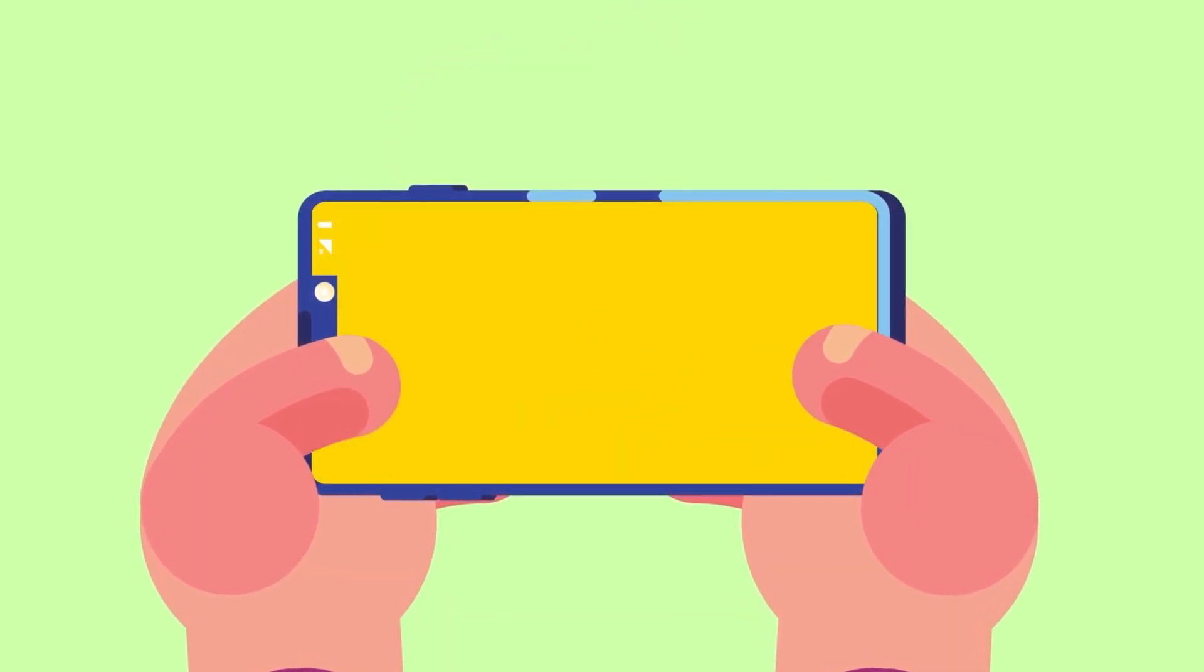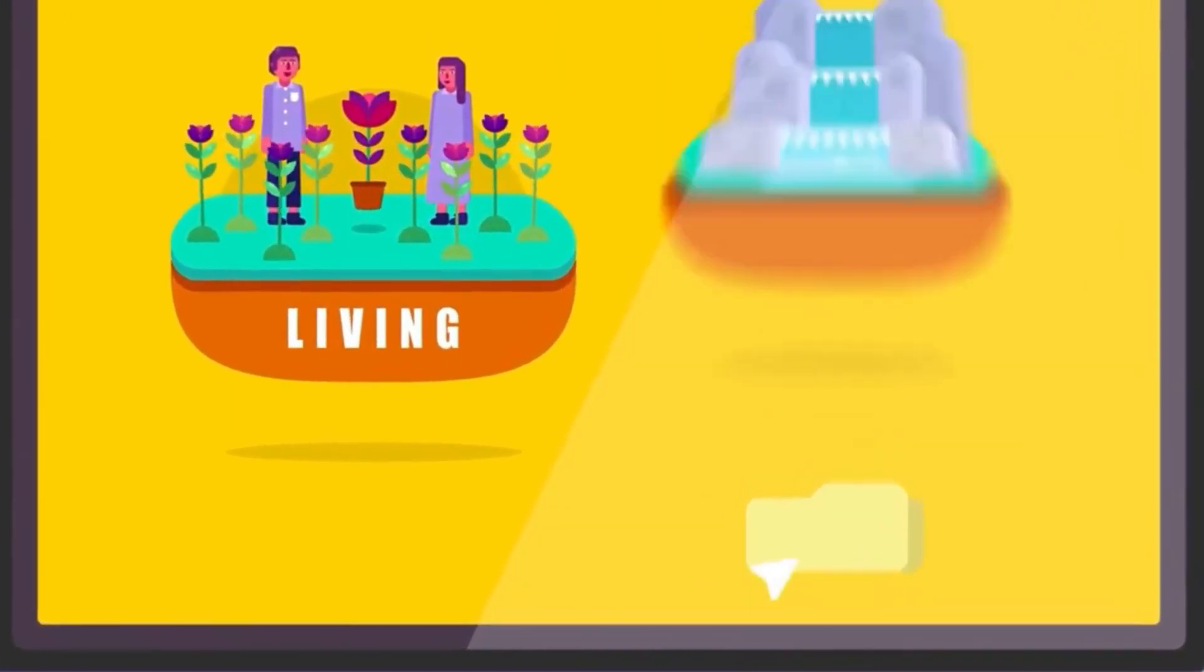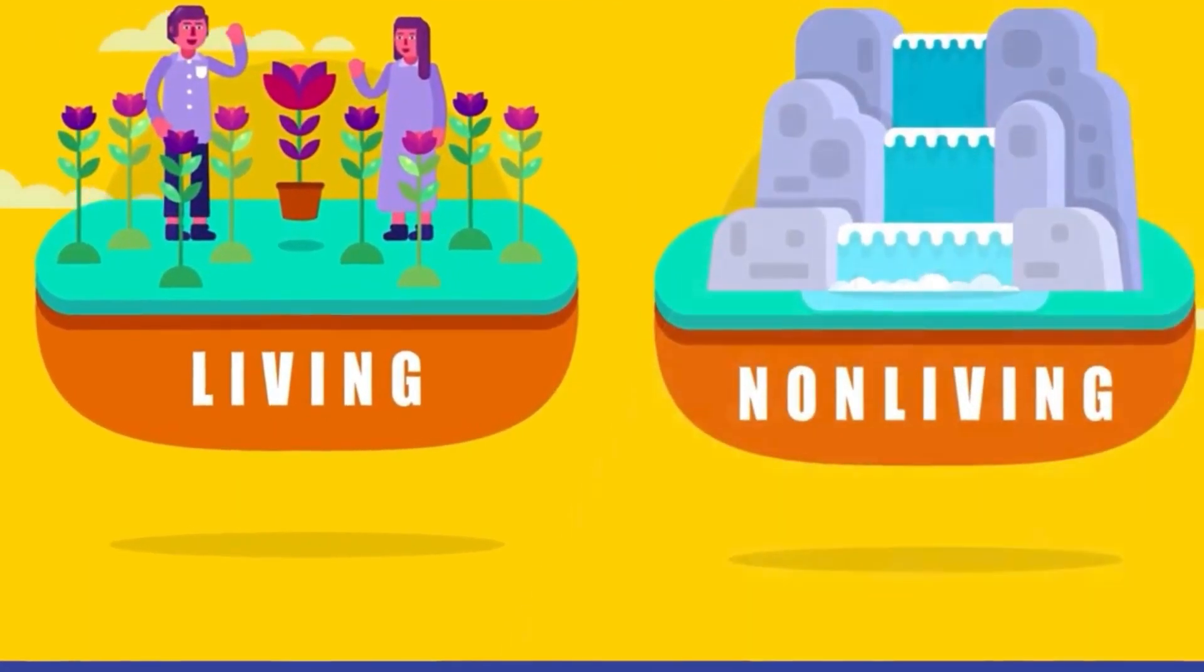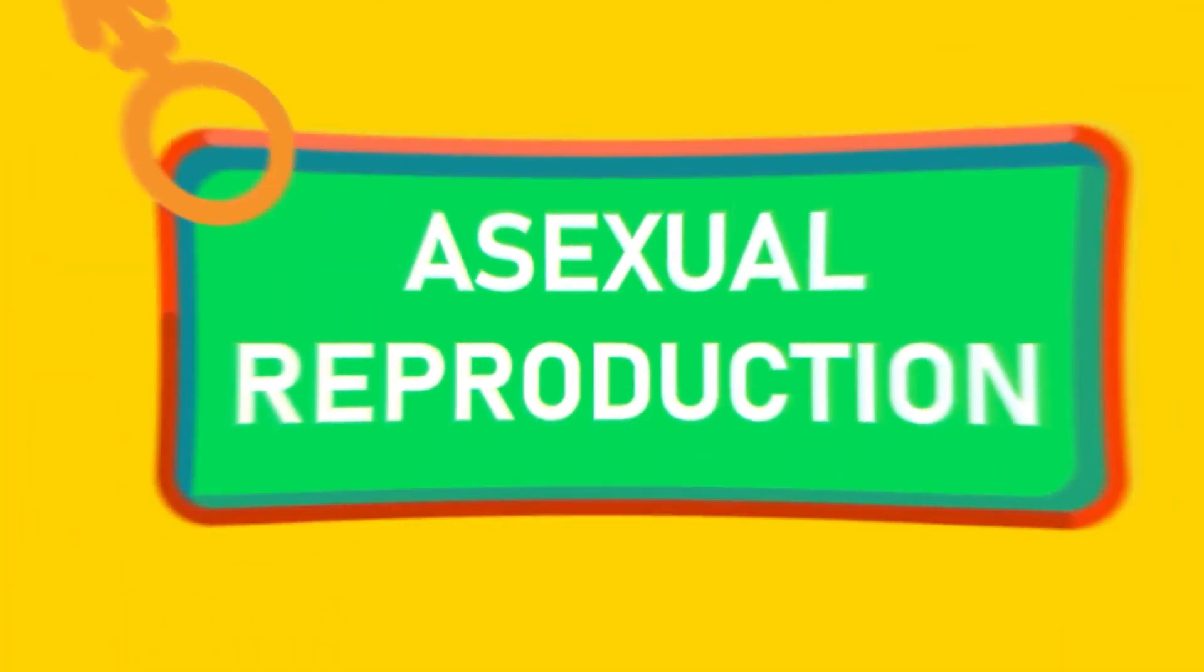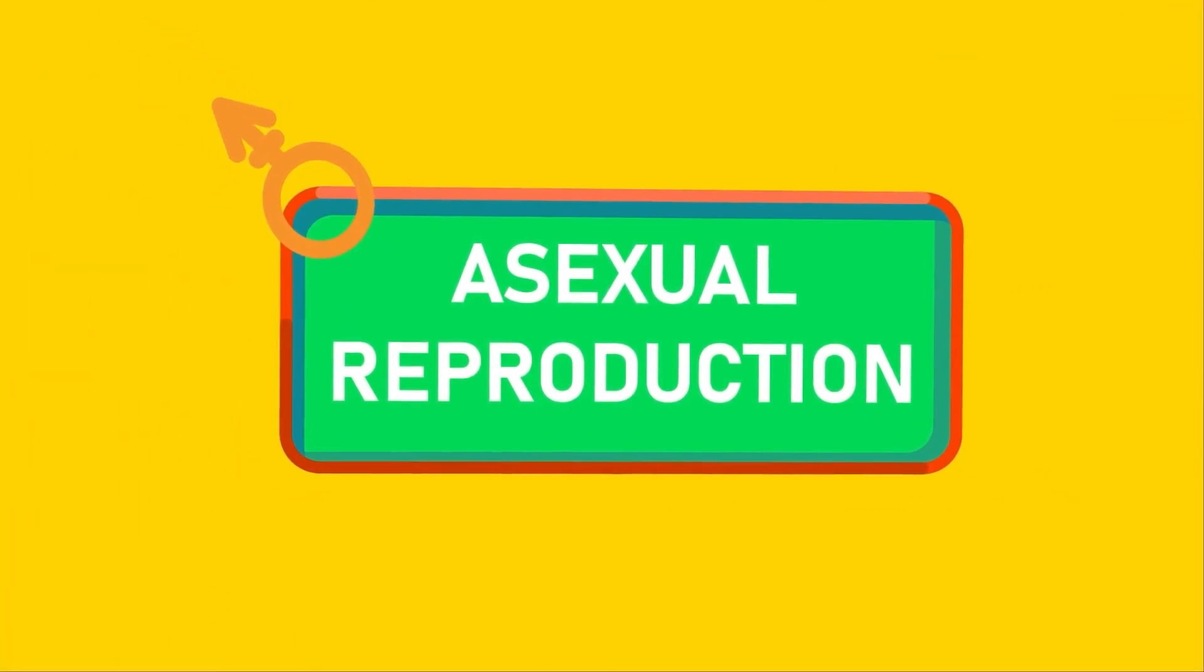As we learned in our very first video, what is biology? Reproduction is a characteristic unique to living things. Non-living things obviously cannot reproduce. In today's video, we will discuss what asexual reproduction is and what are some of its types.